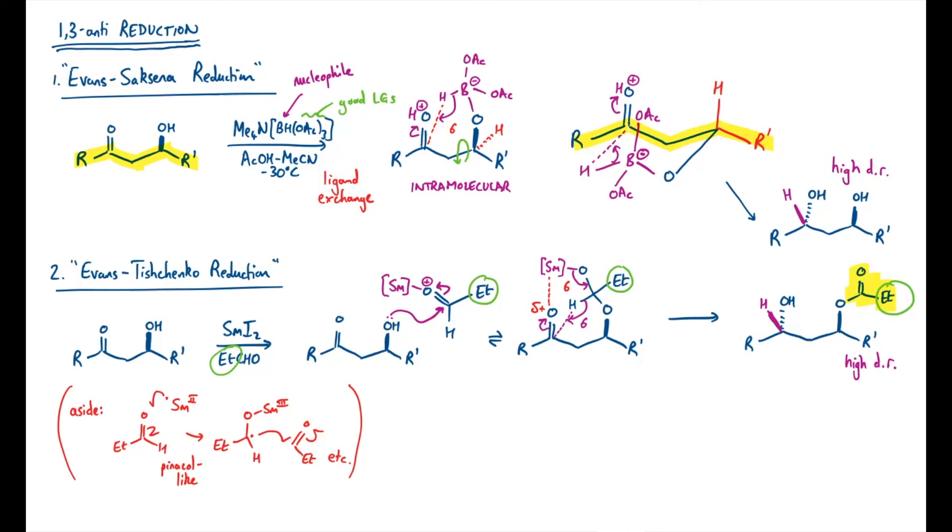So we can draw the transition state just like with the Evans-Saksena one, so I'll just draw it in the gap below. It's largely going to look the same. So there's my zigzag connecting my R groups. Coming forward is the hydroxyl, and this time I have an acetal at the front, but this time I still have the hydride delivering as a nucleophile at the front. Now the acetal has a samarium on it, and the samarium is helping to activate the ketone, so I can draw another six-membered chair at the top here with the samarium, and that's our mechanism again.